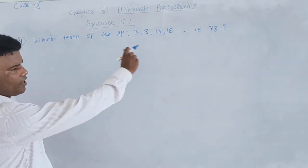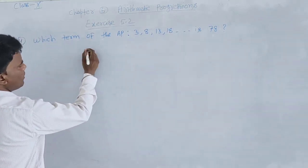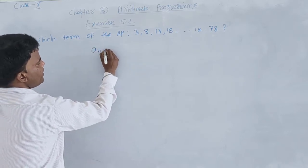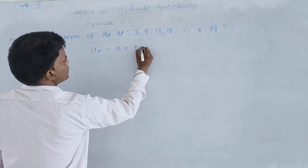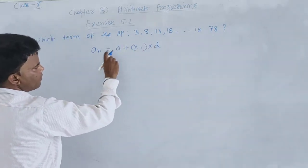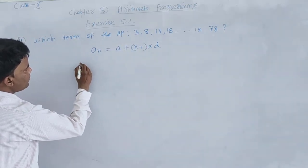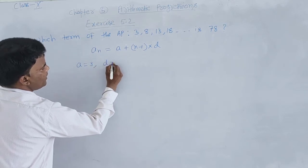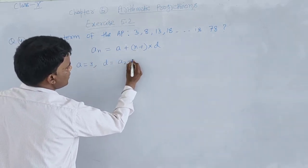We need to find which term means we find the value of n. First of all, we use the nth term formula: An = a + (n−1) × d. In the given AP, the first term a = 3.